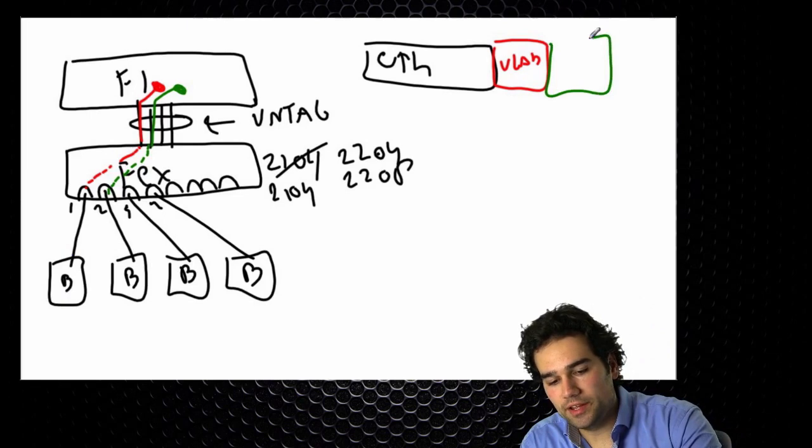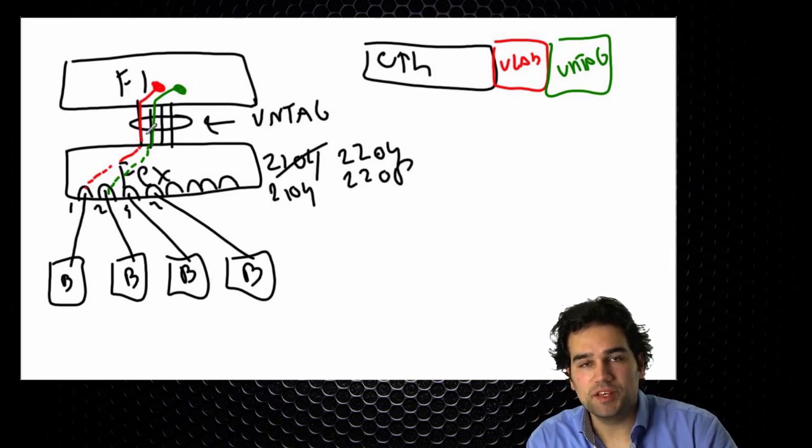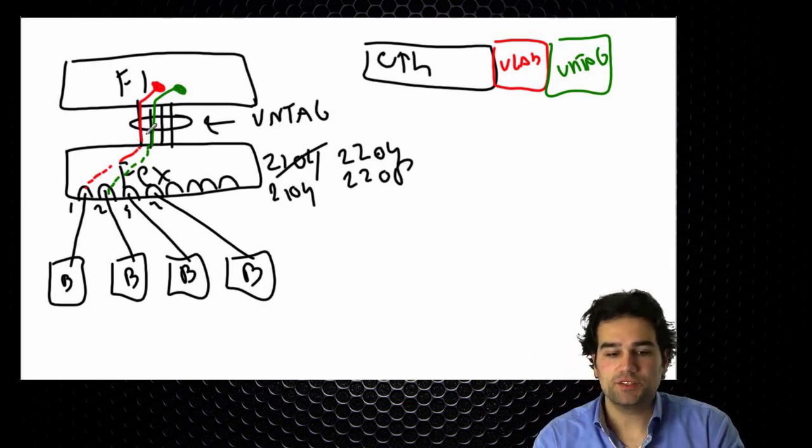And then in front of that I place my VN tag to transport it across the uplink between the FI and FEX. So this is the first step.